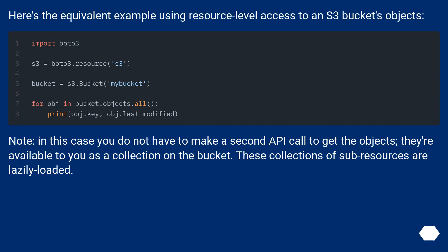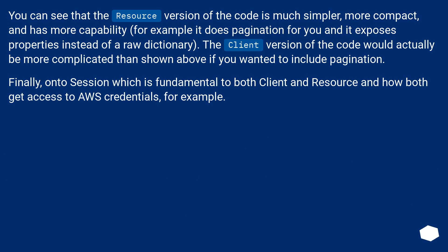Here's the equivalent example using resource-level access to an S3 bucket's objects. Note: in this case you do not have to make a second API call to get the objects — they are available to you as a collection on the bucket, and these collections of sub-resources are lazily loaded. You can see that the resource version of the code is much simpler, more compact, and has more capability — for example, it does pagination for you and exposes properties instead of a raw dictionary. The client version of the code would actually be more complicated than shown if you wanted to include pagination.